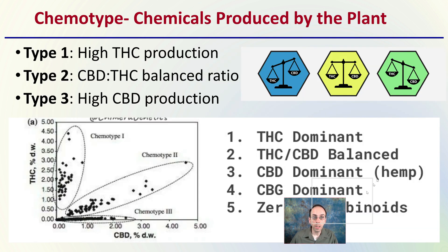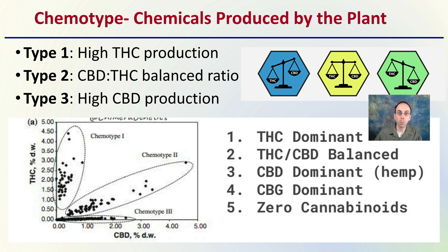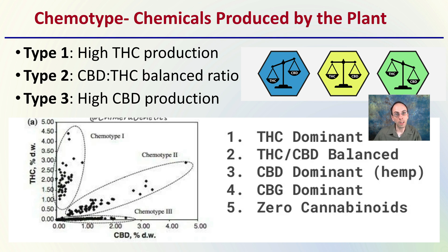That brings us to chemotype, which refers to the chemicals produced by the plant. Type 1 is a high-THC production plant. Type 2 is a balanced ratio of CBD to THC. Type 3 is a high-CBD production plant. Others go further with type 4 being CBG-dominant and type 5 having zero or reduced cannabinoids, looking more at potentially producing terpenes rather than cannabinoids.